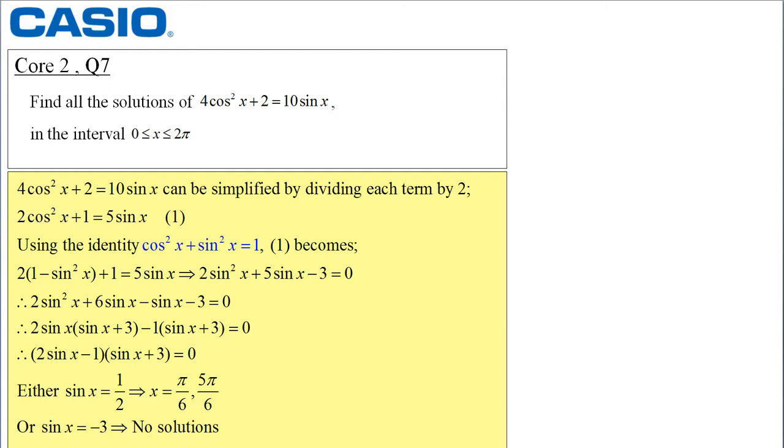In question 7 I need to find all the solutions of 4 cos squared x plus 2 equals 10 sine x when x is less than or equal to 2 pi but greater than or equal to 0.